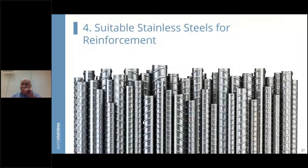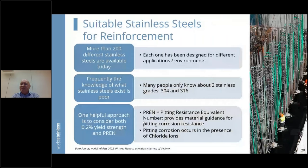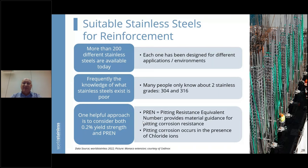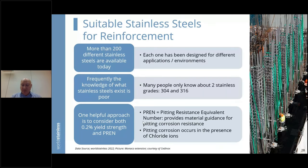Moving to section four: suitable stainless steels for reinforcement. Today we have more than 200 different stainless steels available, each designed for different applications and environments. However, most people only know about two grades — 304 and 316. One helpful approach is to plot the 0.2% yield strength of materials against what is known as the PREN — the pitting resistance equivalent number. This is a measure of resistance to pitting corrosion, which occurs in the presence of chloride ions. The PREN is derived from a formula: chromium content + 3.3 × molybdenum content + 16 × nitrogen content.